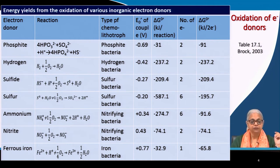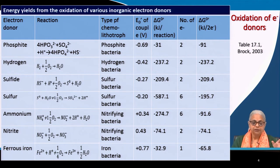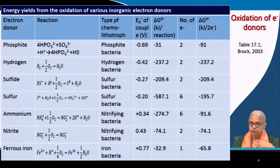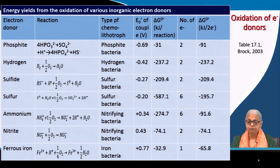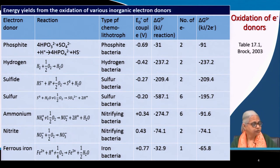Now let us look at the first one — phosphite. Phosphite is rarely found in the environment because it gets easily converted in the presence of air to phosphate. If phosphite bacteria are present and sulfate is also present in the environment, then sulfate is reduced to sulfide and phosphite is oxidized to phosphate. This is also an energy-producing reaction and it's the only known example where phosphorus exists in an oxidation state different from phosphate. There is only one example.